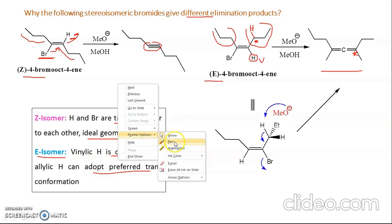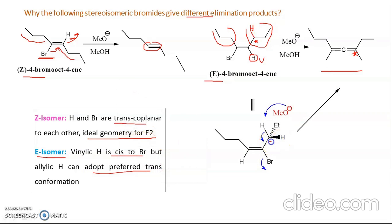If we draw the E isomer differently, the starred carbon has two hydrogens; either one can act as the hydrogen to be removed. The C–H bond is broken, a new C–C bond forms, and the C–Br bond is also broken, so finally we are getting an allene.